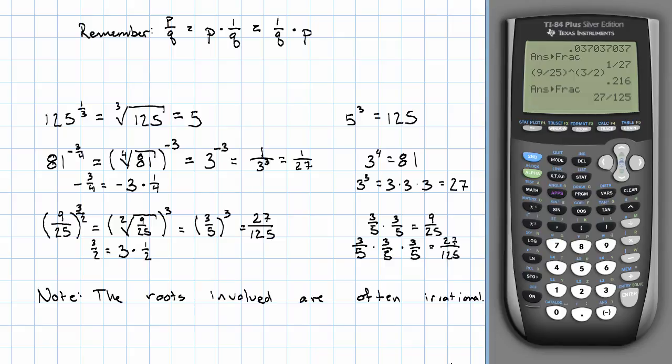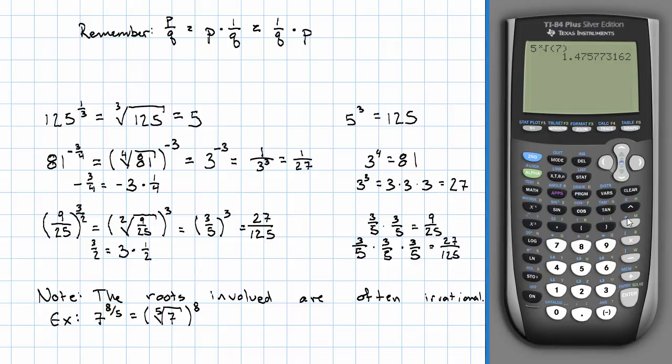Notice that in general, the roots involved are very often going to be irrational. For example, if I take 7 to the 8 fifths power, that's going to be the fifth root of 7 to the 8th power. I could do that on my calculator by taking the fifth root of 7 and then raising that to the 8th power. That's about 22.499. Or, I could just say 7 to the 8 fifths power. Same answer, of course.